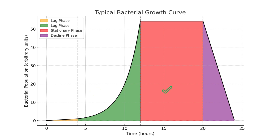Number 3: Stationary phase — the bacterial death rate is equal to the bacterial rate of reproduction and multiplication. Number 4: Death or decline phase — bacteria start dying; here the death rate is more than the reproduction rate.